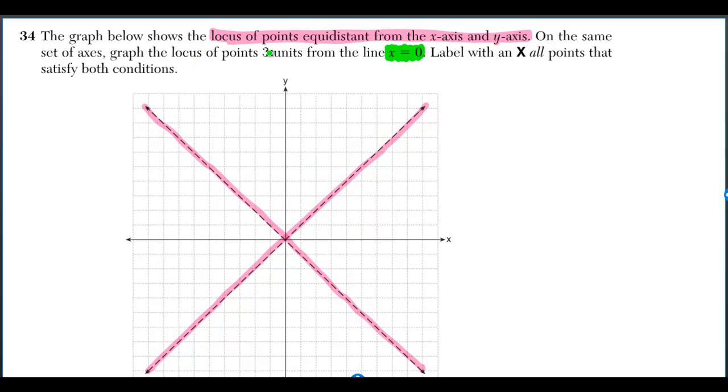Now they want the locus of points three units from the line x is equal to zero. x is equal to zero is actually the same thing as the y-axis. If I just tell you x is equal to zero, then you're somewhere on the y-axis. But we want the locus of points three units from the line x is equal to zero.